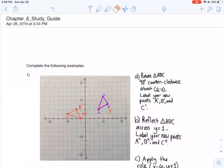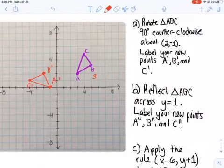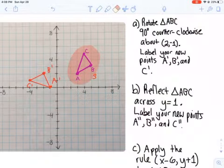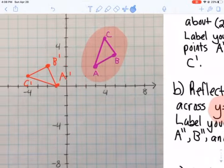Okay, I'm going to walk through part B now of number one on the chapter six study guide. Now this one's asking you to reflect our initial shape here. You're going to be reflecting it across the line y equals one. This is what's been tripping a lot of people up, so I'm going to take a moment to talk about this.